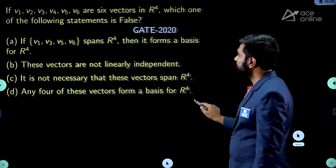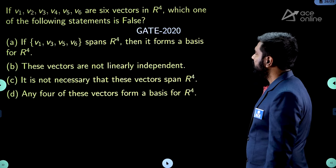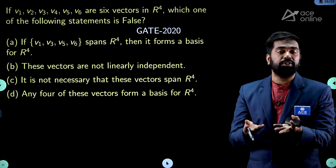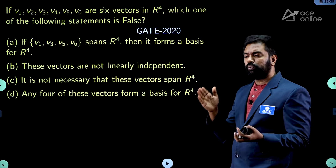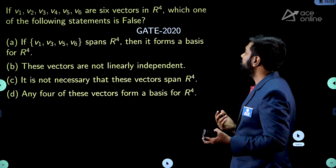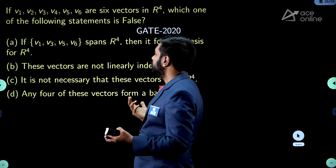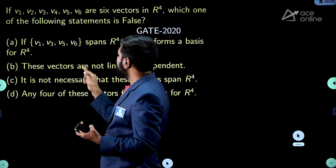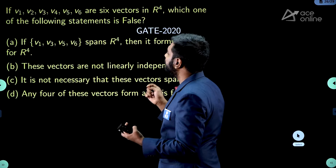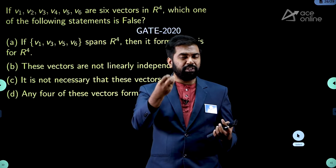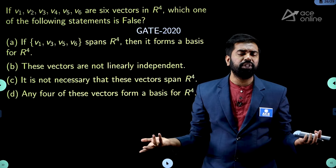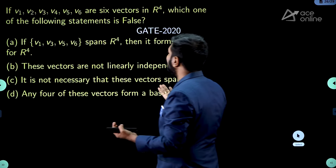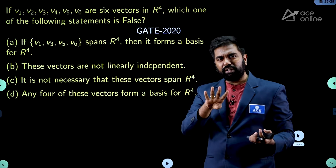The next two problems are very tricky. If V₁, V₂, V₃, V₄, V₅, V₆ are 6 vectors in R⁴, which of the following statements is false? Option A: if V₁, V₃, V₅, V₆ span R⁴, then they form a basis for R⁴. The moment you say 4 vectors are spanning R⁴ they definitely form a basis — this is a true statement. When you are in option A, you treat those 4 vectors as spanning R⁴.